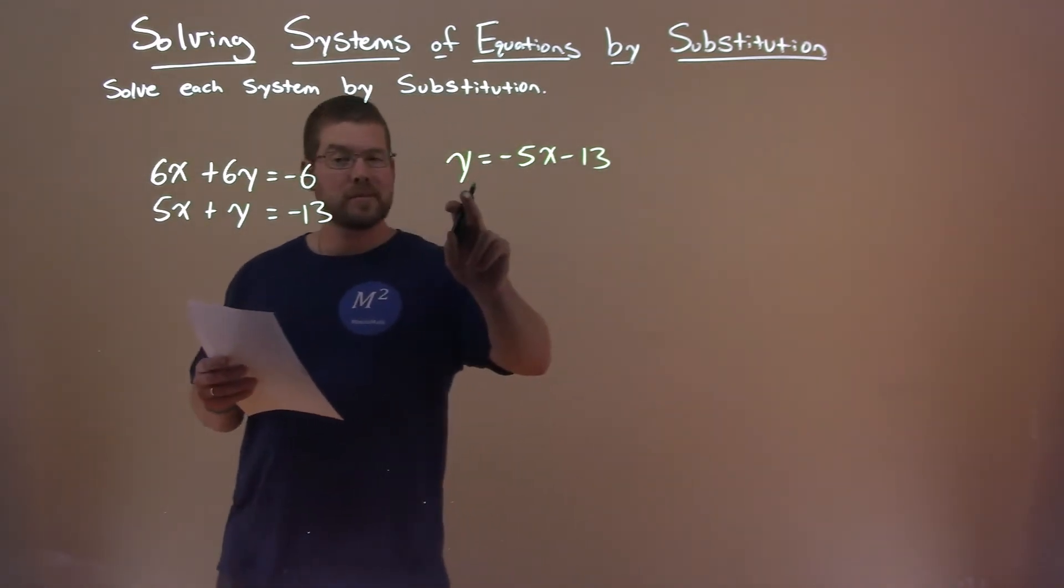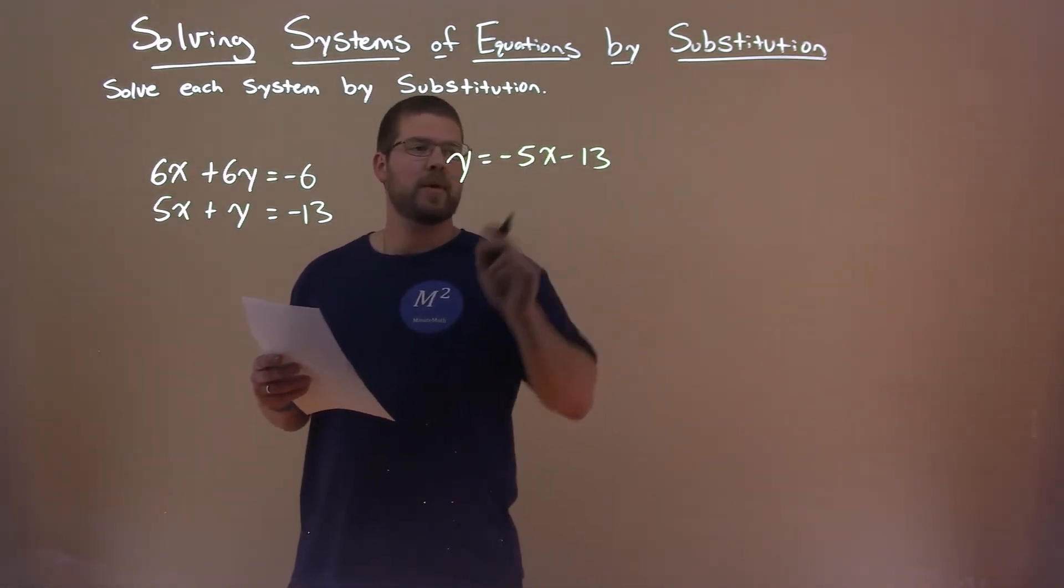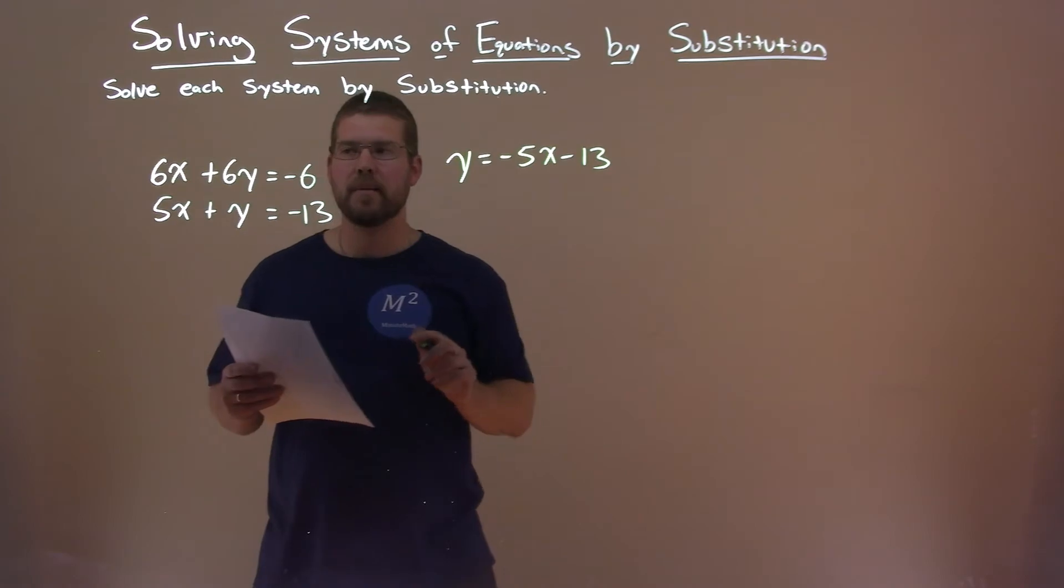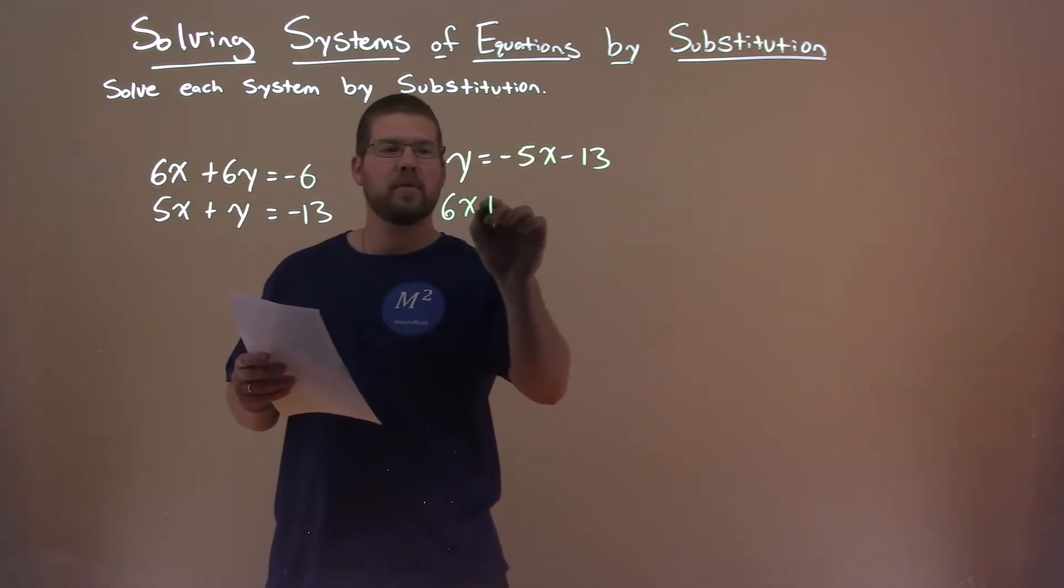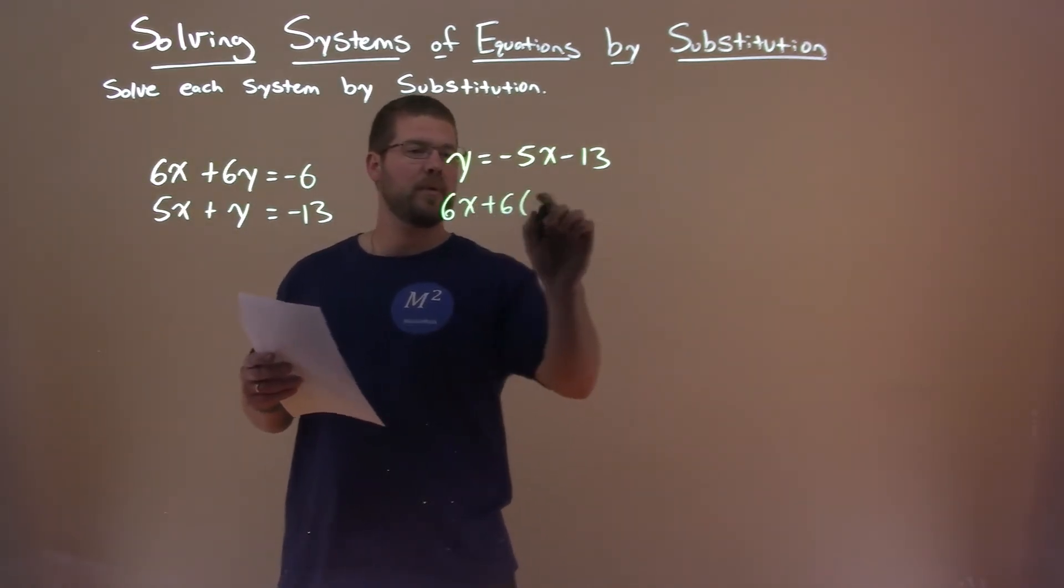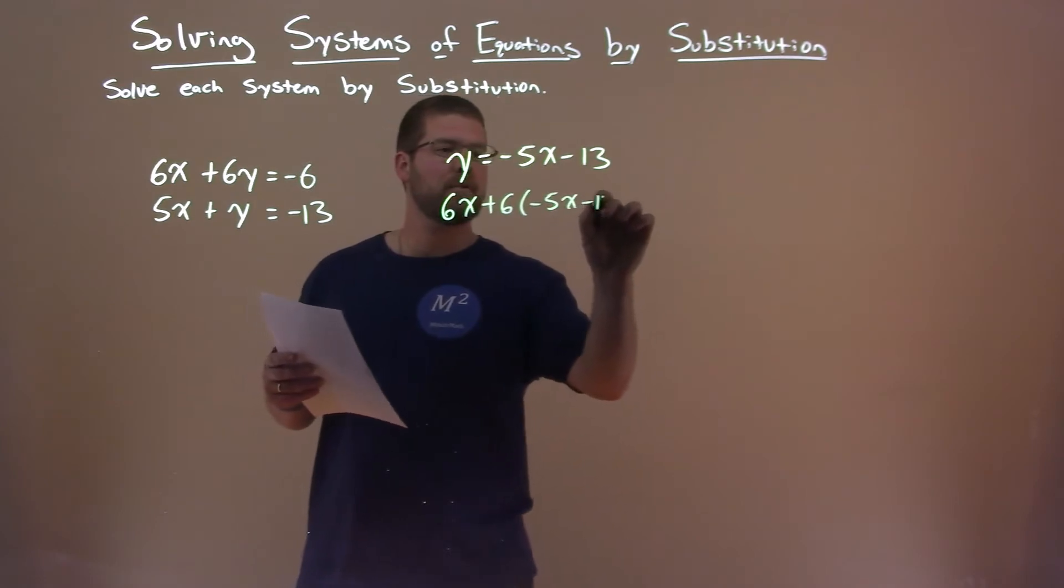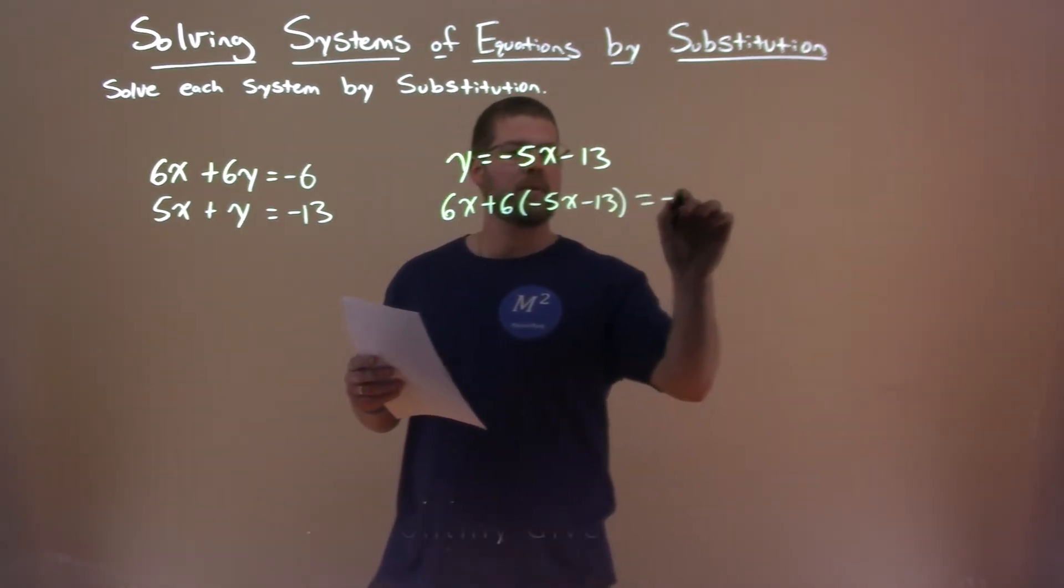With that, we're going to substitute negative 5x minus 13 for this y. 6x plus 6 times y, y being minus 5x minus 13, and that equals minus 6.